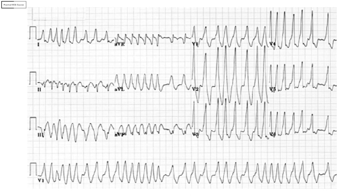Normally I would follow the default systematic approach for any ECG interpretation — rate, rhythm, axis, deflections, intervals, etc. But for arrhythmias I use a separate systematic approach which enables a rapid diagnosis of most arrhythmias. That is a separate talk by itself and I will be talking about it during my teaching session on tachyarrhythmias in July. Let me talk through how I interpret this ECG.